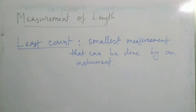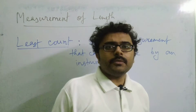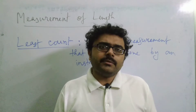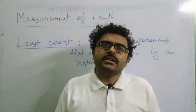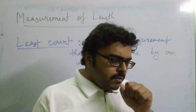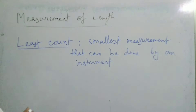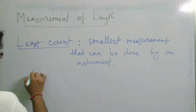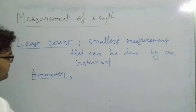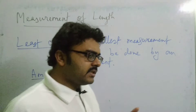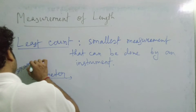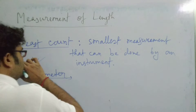Likewise, you have already studied about the ammeter. Do you know what an ammeter is? You have studied about current, and for measuring current there is a device called the ammeter. Ammeter is a device used for measuring current. Now, say for an ammeter, there are 10 divisions in between the 0 ampere and 1 ampere marks.